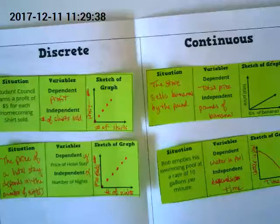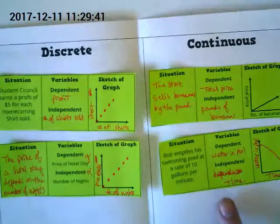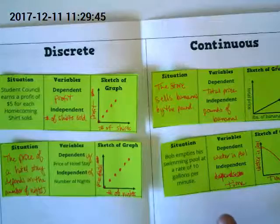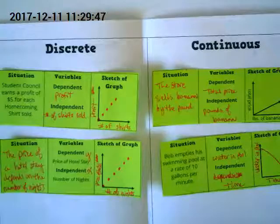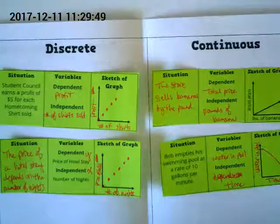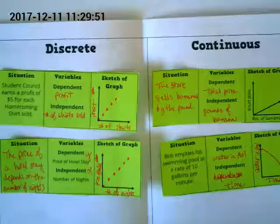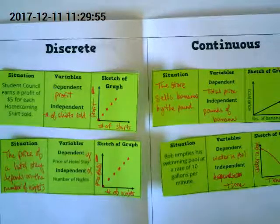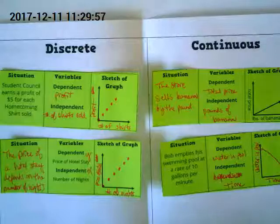The dependent here is the water in the pool. It depends on the amount of time. This is a really good example of the data in a continuous is within a certain range. We aren't going to go lower than zero because he won't have any more water in the pool.